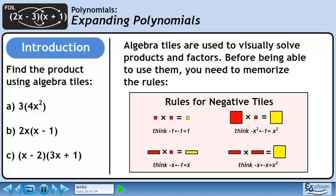Two red rectangles multiplied together give a large yellow square. This is the same as minus x times minus x equals x squared.